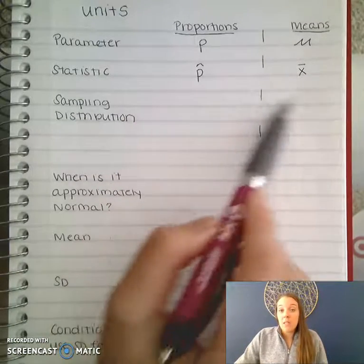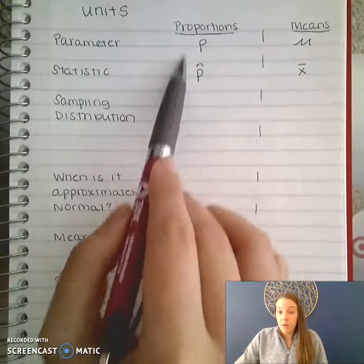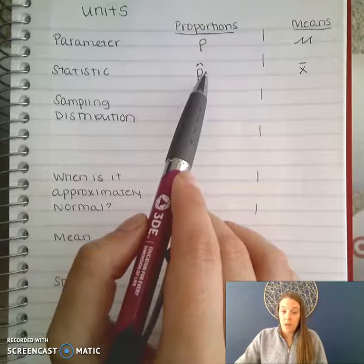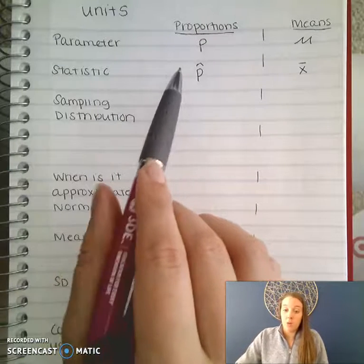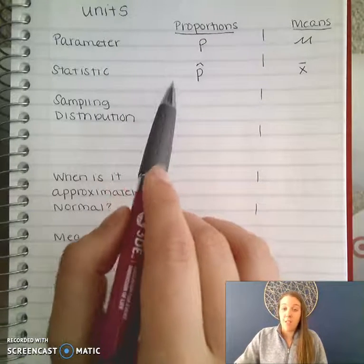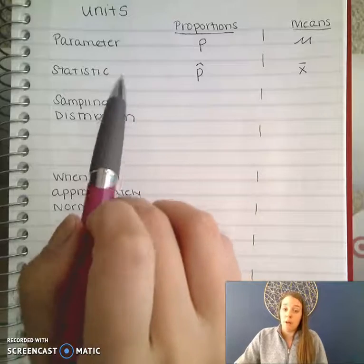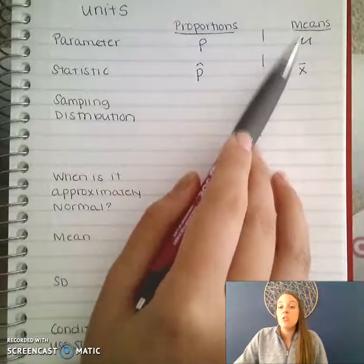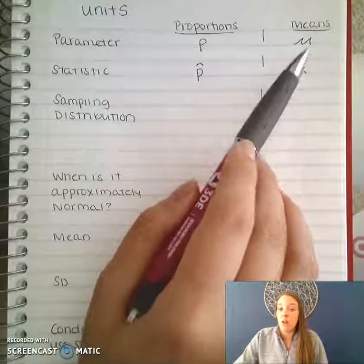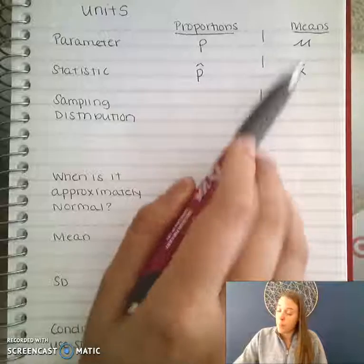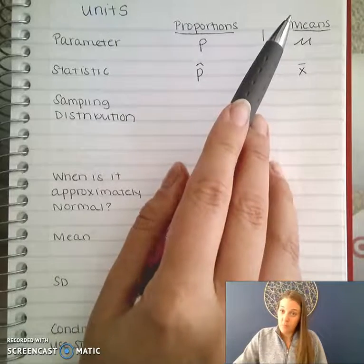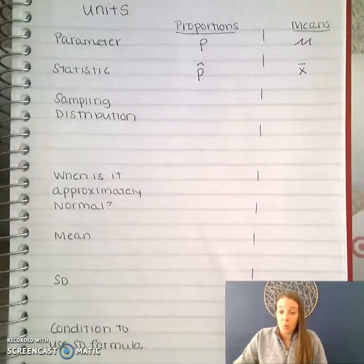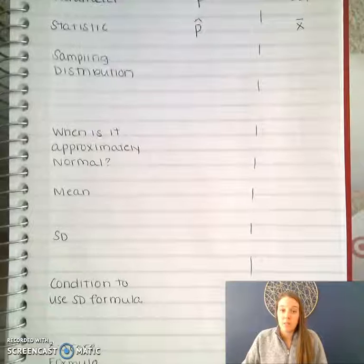The correct use of variable and notation is going to be very important on the AP exam. This is one way that you might lose points even though you know what you're talking about. Make sure you use the right notation — if you use x-bar instead of mu by accident, you're going to get a point taken off for something really silly.